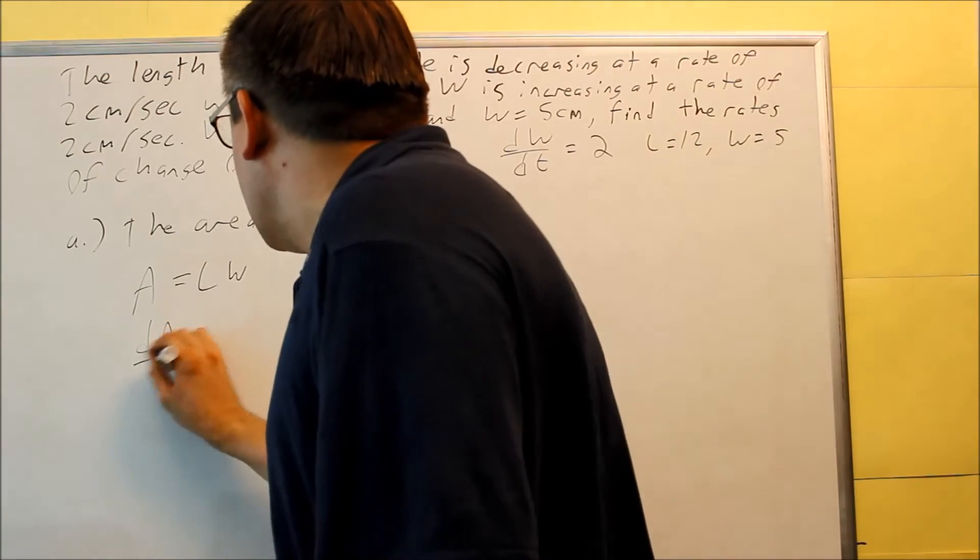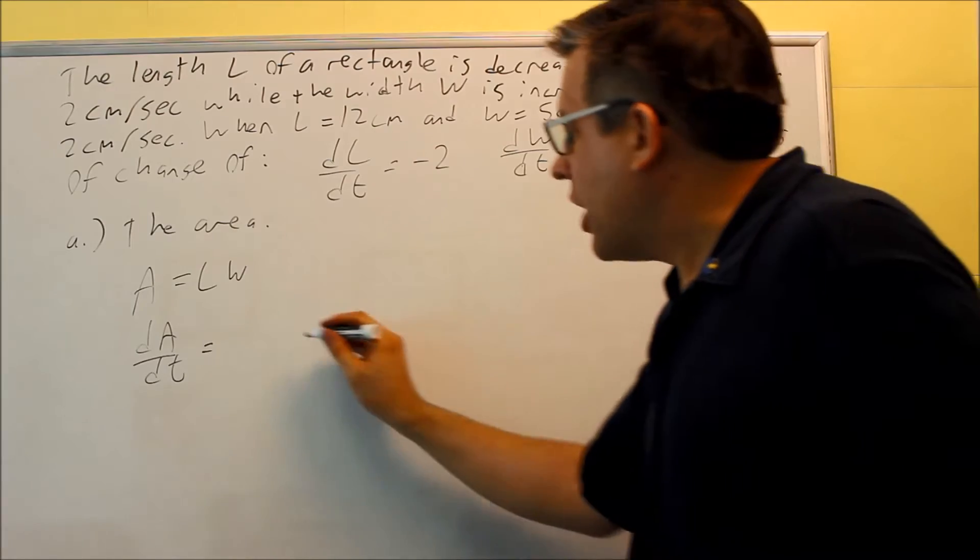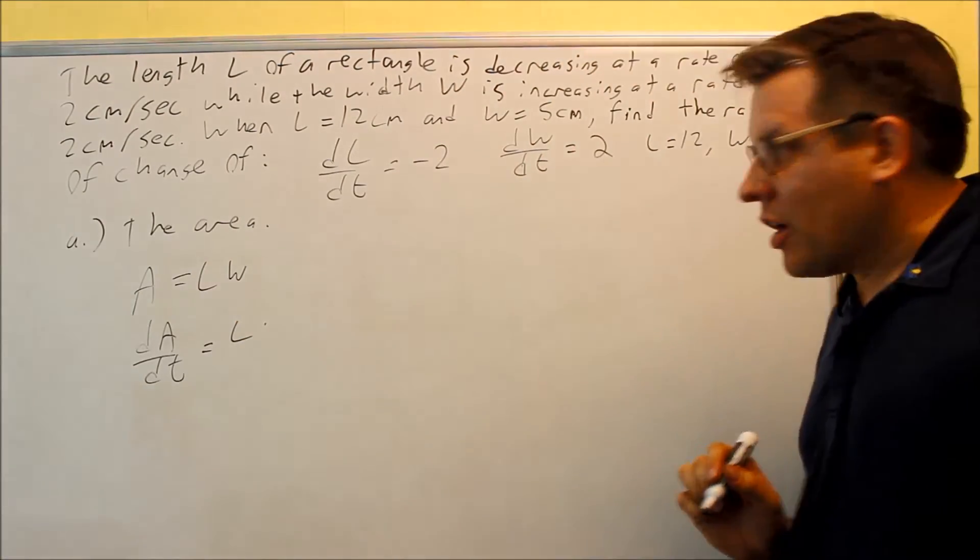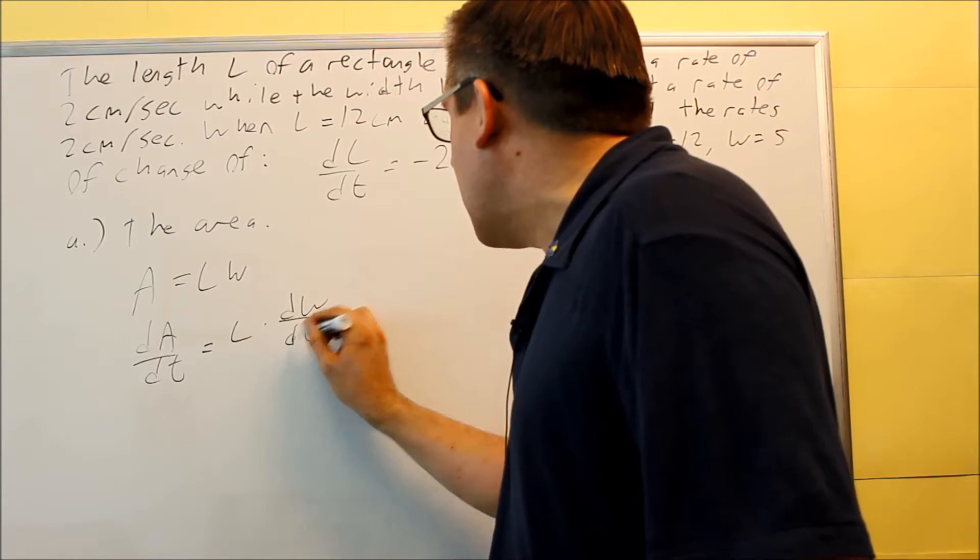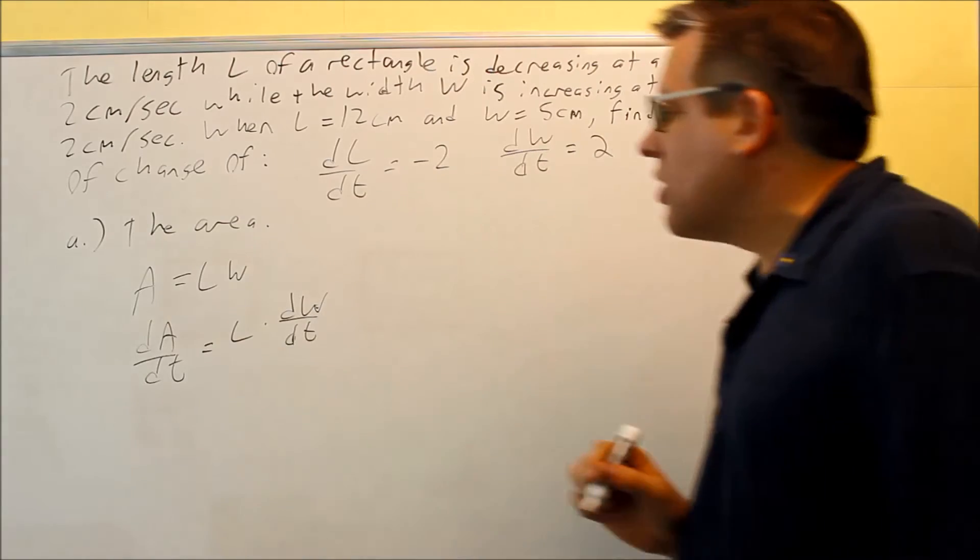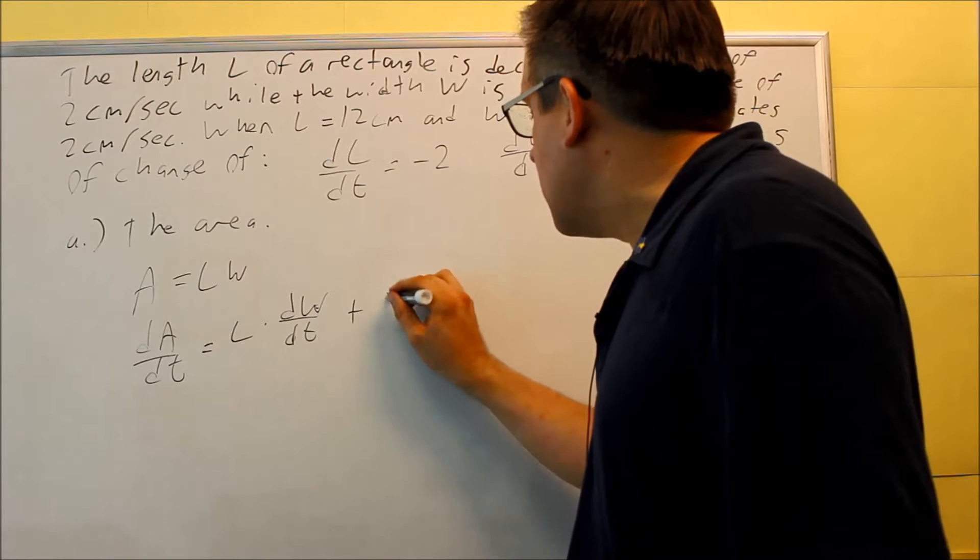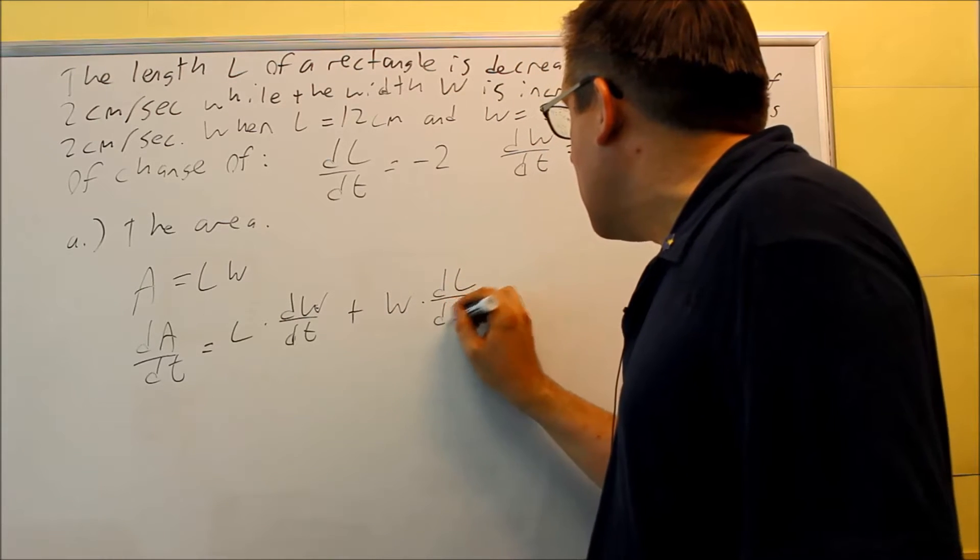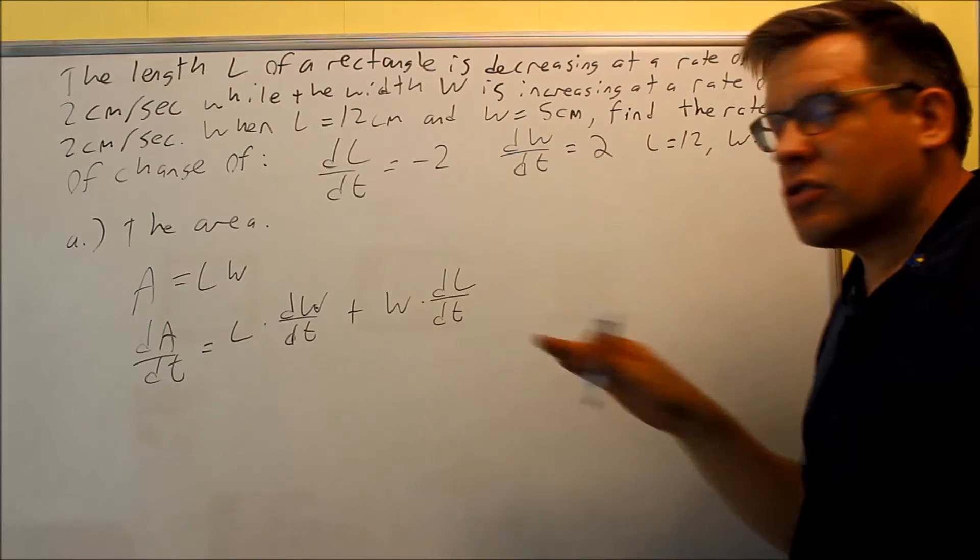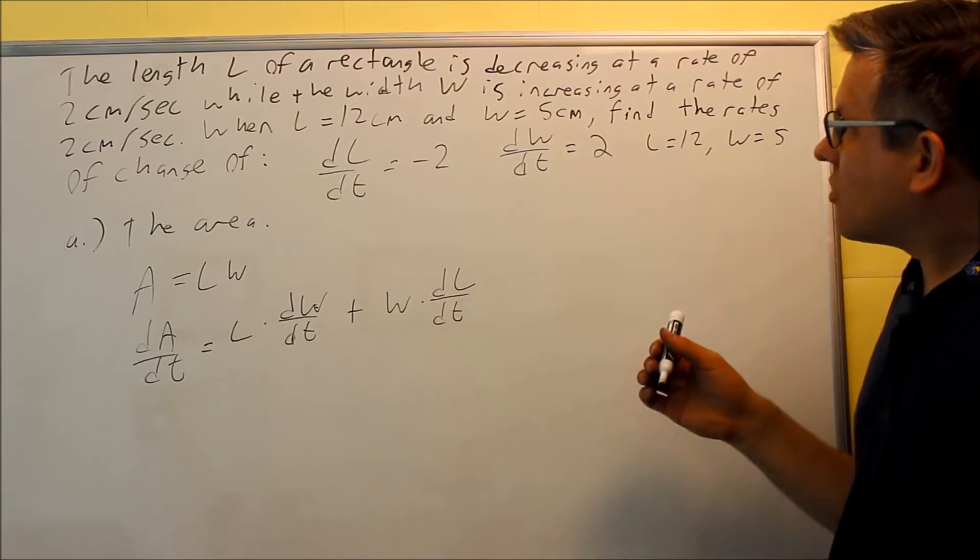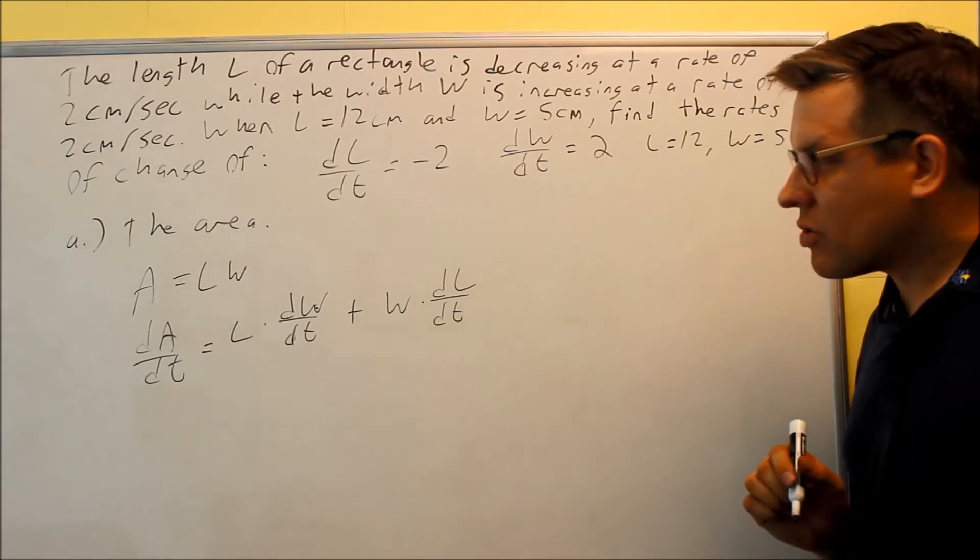So I have dA/dt. Now L times W, we're going to apply the product rule. Product rule says the first thing times the derivative of the second. The derivative of W is dW/dt - normally I would apply the power rule, but because it's raised to the first power, you would just get dW/dt. Plus the second thing, which is W times the derivative of the first, that is dL/dt. So this is the correct product rule. They're asking us to find the rate of change of the area, so actually dA/dt is what they want us to solve for.